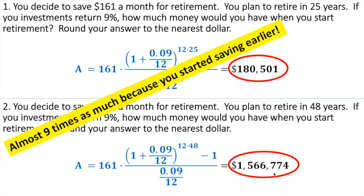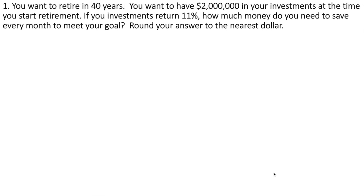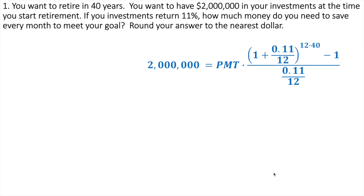Now I'm going to spice it up a little bit. We've done a couple of those finding out what the total amount would be. But look at this one — it says that you want to retire in 40 years and you want to have $2 million when you retire. So how much do you need to save per month? We've got our formula. What we want to do is go back to our savings plan formula and plug in everything we know. We know $2 million is going to be our ending amount, but we don't know what our payment amount is — we'll have to solve for that.